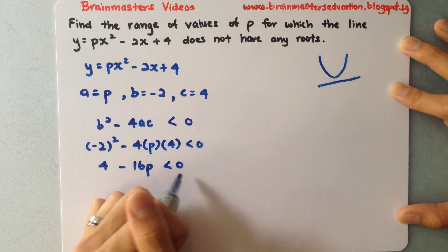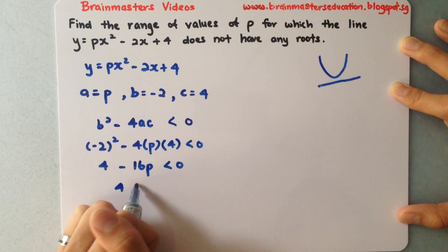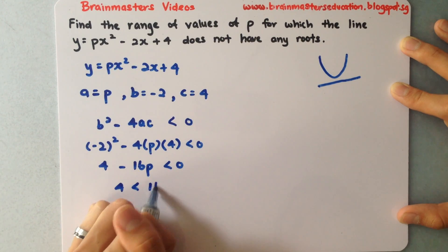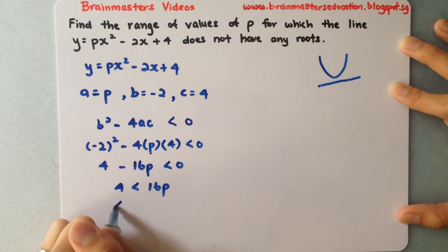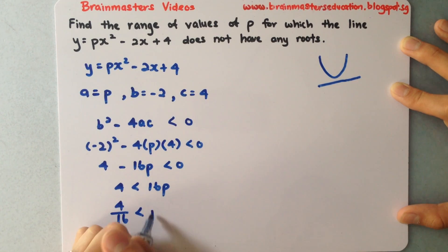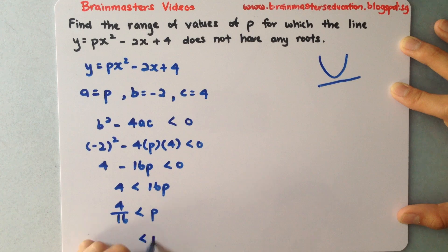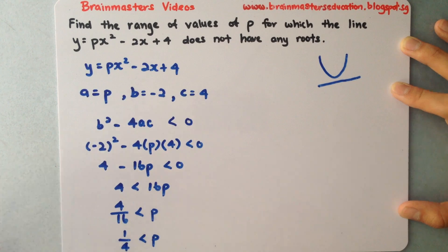I'll bring the terms over and divide both sides by 16. After simplifying, I get p must be greater than 1 over 4.